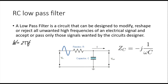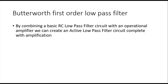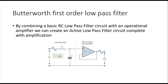But there is a disadvantage of this filter: the amplitude of the output is always less than the input. To overcome this problem we will be using the Butterworth first order low pass filter. By combining a basic RC low pass filter circuit with an operational amplifier we can create an active low pass filter circuit with amplification. This is the circuit diagram of a Butterworth first order low pass filter. The first portion contains the RC low pass filter and the second portion contains the op-amp. The output of the RC low pass filter is given as the input at the non-inverting terminal of the op-amp, and the output of the op-amp is fed back to the inverting terminal. Here we can provide feedback resistors and set the gain accordingly by the values of RF and RI.